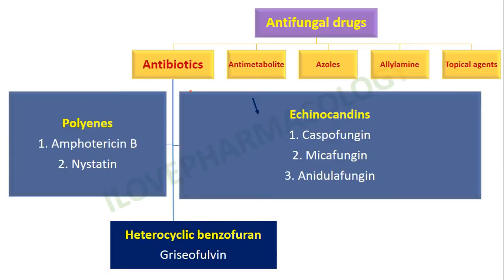The drugs under antibiotics which act as antifungal drugs are polyenes — for example, amphotericin B and nystatin. You also have the heterocyclic benzofuran, that is griseofulvin, and a newer group of drugs called echinocandins, with examples: caspofungin, micafungin, and anidulafungin.